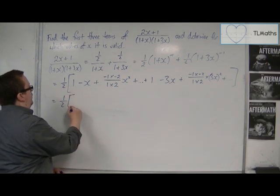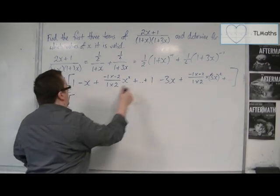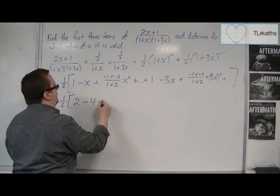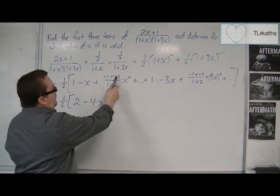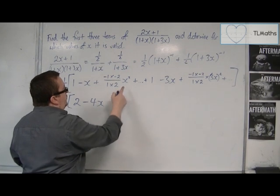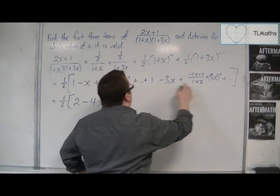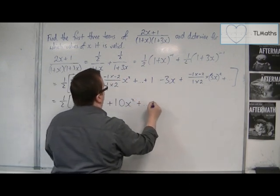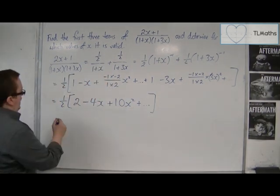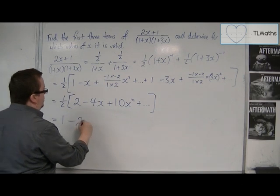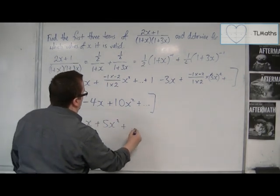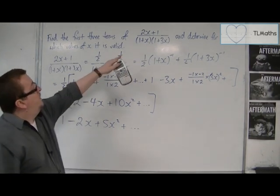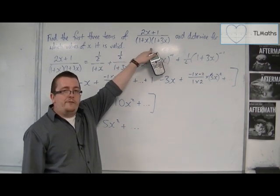So we've got a half of 1 plus 1, so that's 2. We've got minus x, take away 3x, so minus 4x. Then we've got this. So we've got 2 over 2, which is 1, times x squared. And that's 1 again. So we've got x squared plus 9x squared, so 10x squared. Plus a load of other terms that I just could ignore. And so we've got 1 half of that. So 1 take 2x plus 5x squared plus a load of other terms. And so that is the first three terms of the binomial expansion of that fraction there.